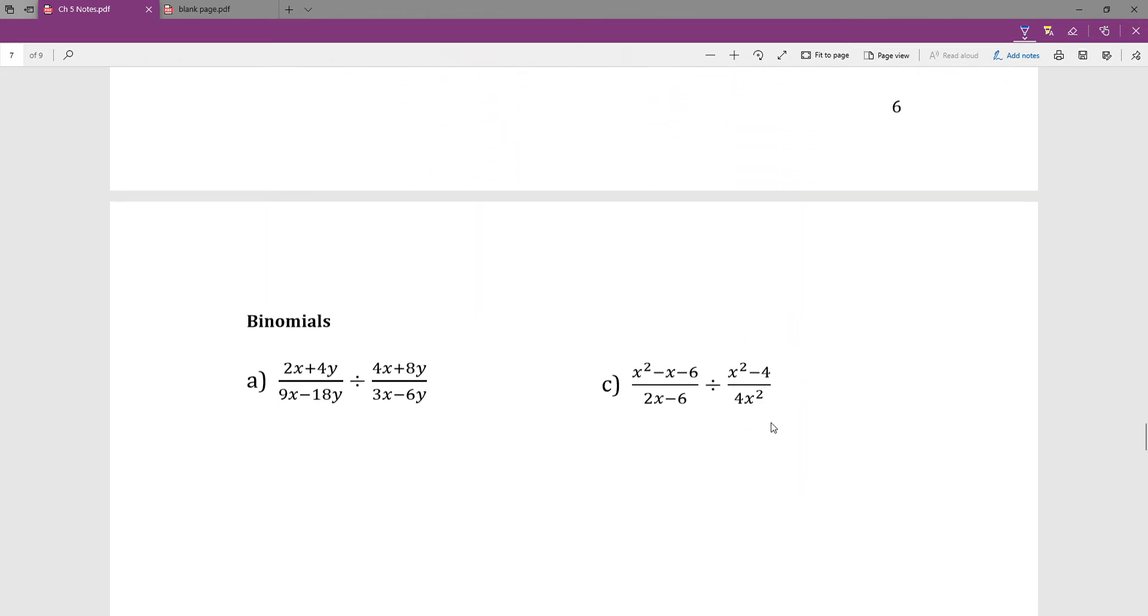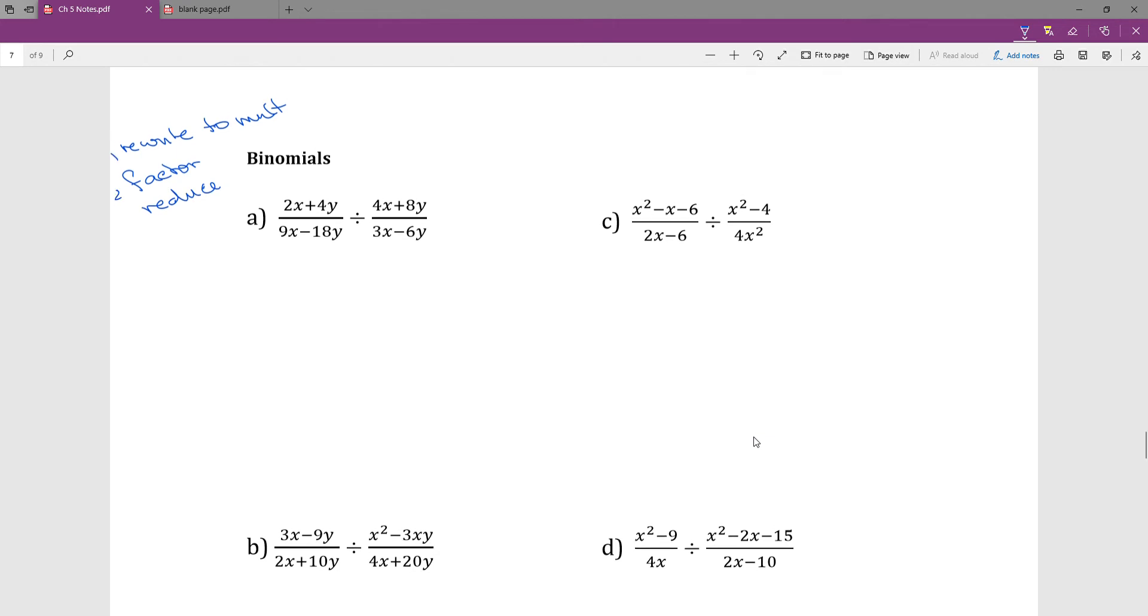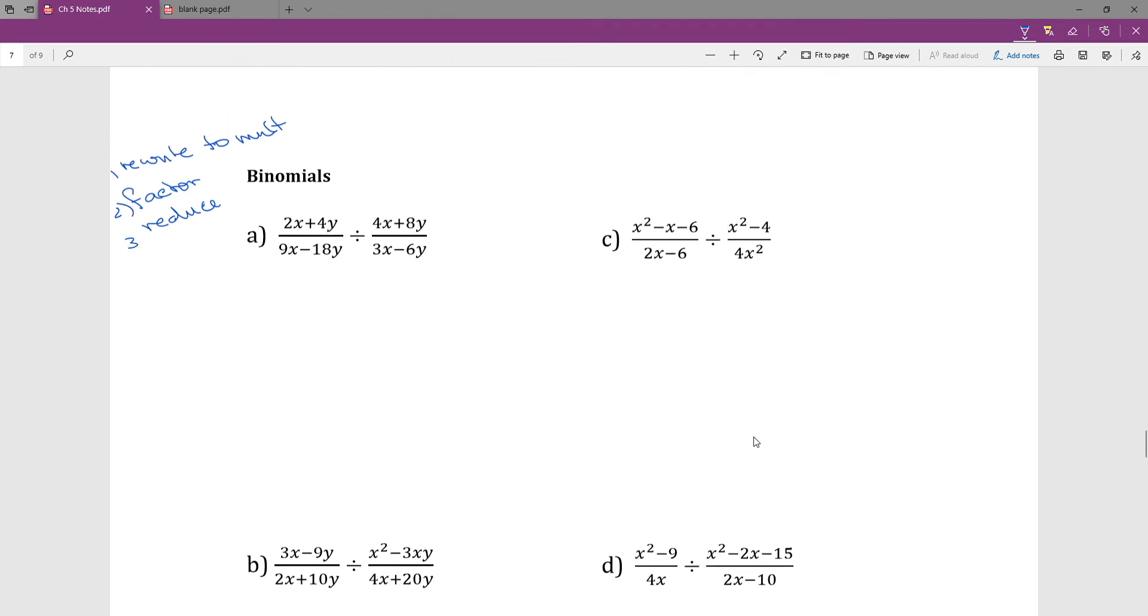So the next part of division kicks it up to the binomials. So those were all monomials making up my rational expressions being multiplied. And again, with these ones, we're going to rewrite to multiplication. We're going to factor, and we're going to reduce. Three things to do. None of them are overly wordy, but there's a lot involved in them.